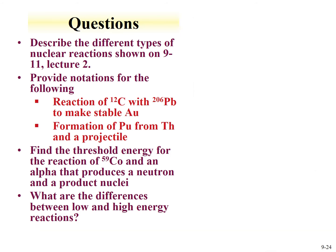You should be able to provide notations for certain nuclear reactions. For example, carbon-12 plus lead-206 making stable gold: the target is lead-206, the projectile is carbon-12. Gold-197 is the stable isotope. By mass-balance, the remaining product would be fluorine-21. So the reaction notation would list lead-206 as target, carbon-12 as projectile, with products gold-197 and fluorine-21.